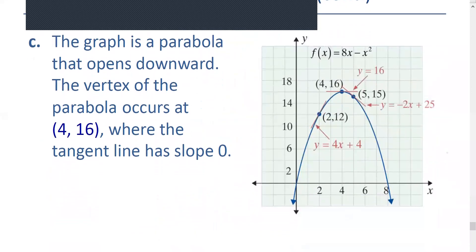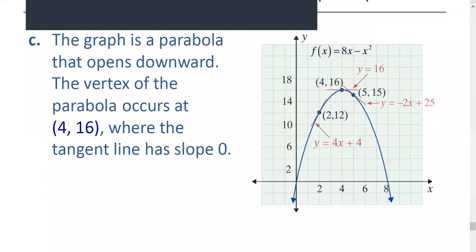We should get a graph that looks like the provided graph here. The function f of x equals 8x minus x squared is a parabola, showing the increasing, horizontal, and decreasing tangent lines.